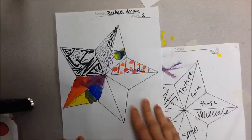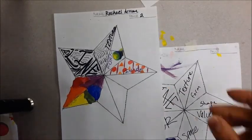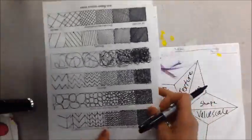And with your star project, we're going to do two elements today. First thing we're going to start with value scale. So I have these at your table.